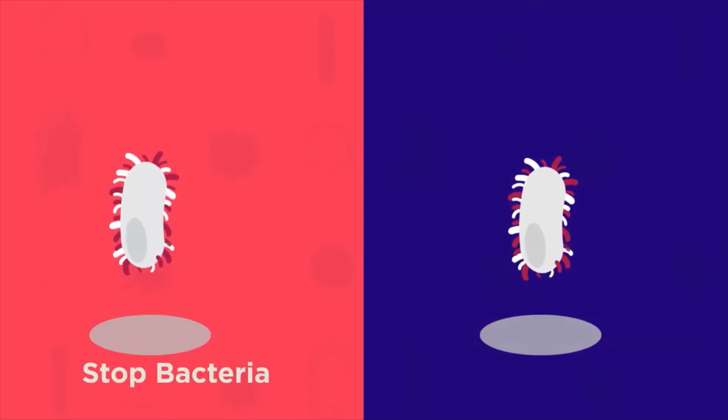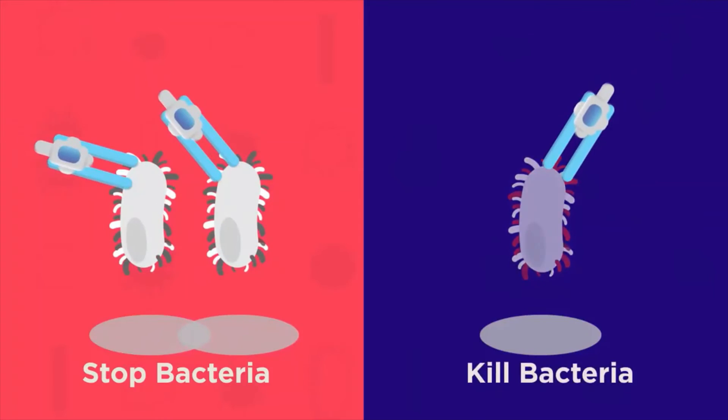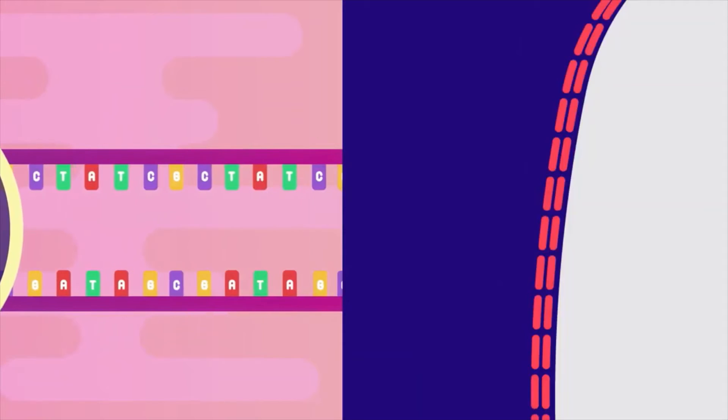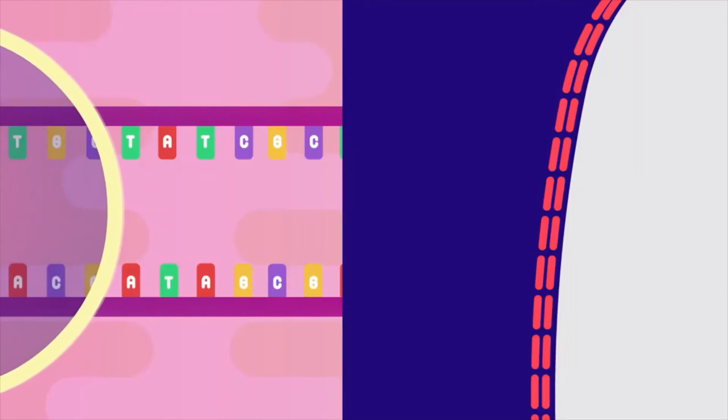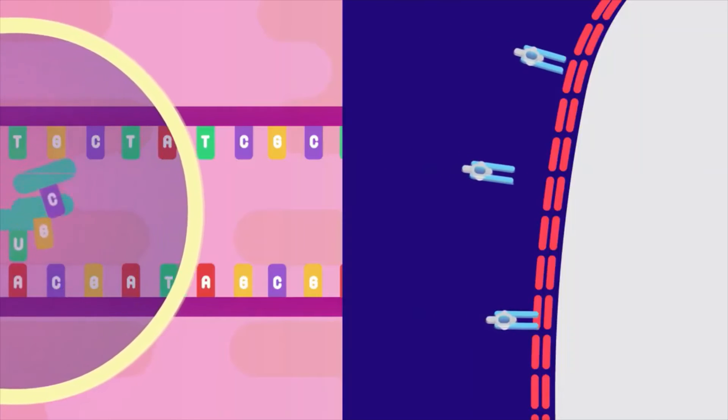This is done in two ways, either by stopping the bacteria from reproducing or by killing the bacteria. Antibiotics do this by inhibiting certain metabolic or chemical processes which occur inside the bacteria. For example, they can stop protein synthesis, DNA replication or break down their cell wall.